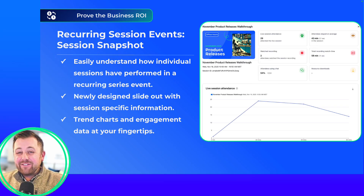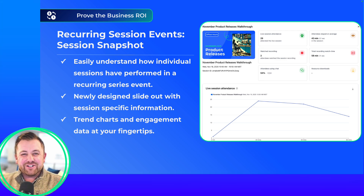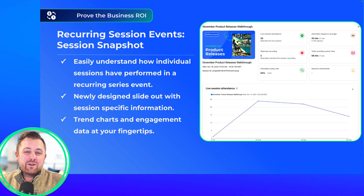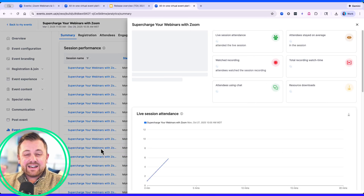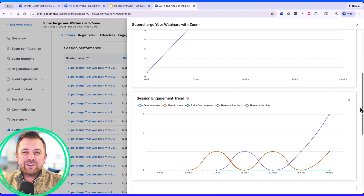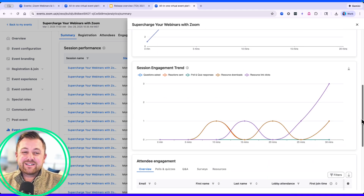And finally, for December, for recurring session events, we have now included a session snapshot. This allows you to drill down into individual session performance quickly and easily. We've even included some trend charts that show attendance and engagement over the duration of the session, and this will really arm you with good information to help you know how you are connecting with your attendees.